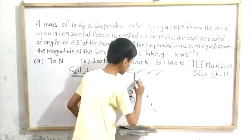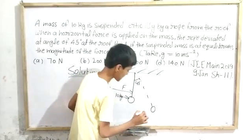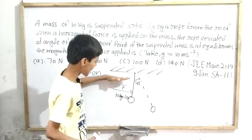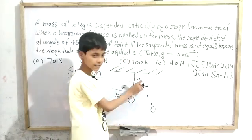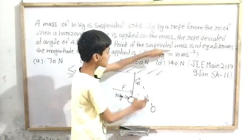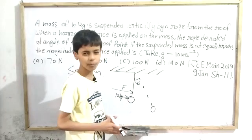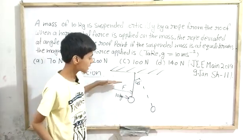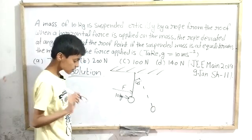Since the suspended mass is at equilibrium, the net force on it is zero. This means the x-component of the net force will be zero and the y-component of the net force will also be zero. These are the conditions for equilibrium. If we find the net force expressions for sigma Fx and sigma Fy and set them equal to zero, we can find the unknown force value.